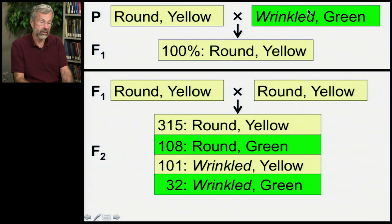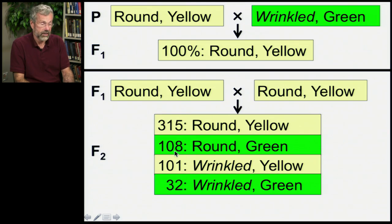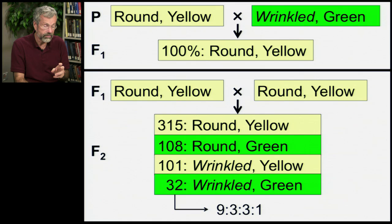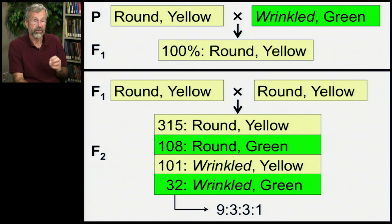By performing this cross several times — dozens of times — he could look at the ratio of different phenotypes in the F2 generation. In this particular case, there are 315 round yellow for every 108 round green, every 101 wrinkled yellow, and every 32 wrinkled green. This comes to a ratio we need to keep in mind going forward: 9 to 3 to 3 to 1.